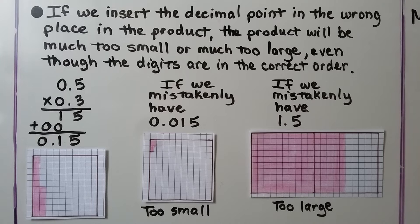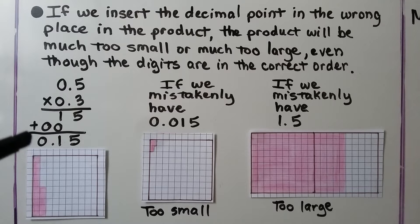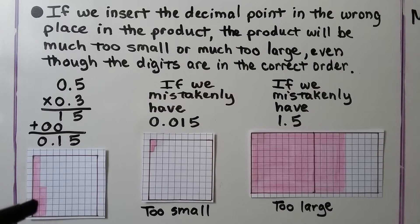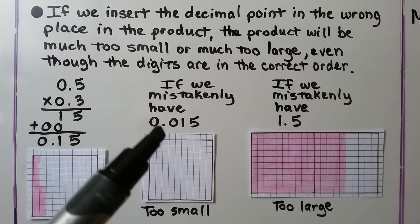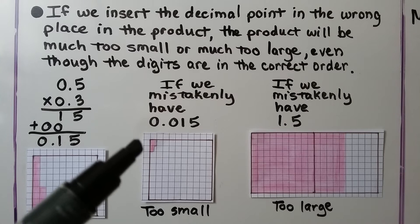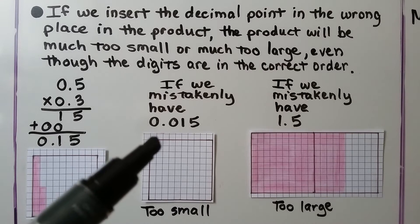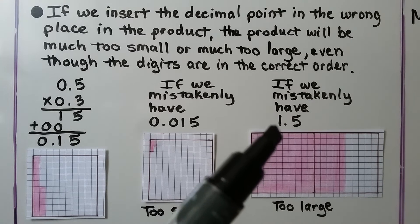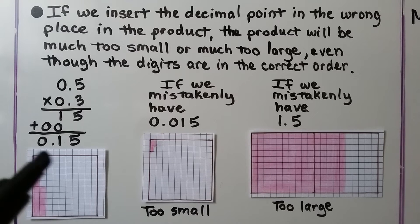If we insert the decimal point in the wrong place in the product, the product will be much too small or much too large, even though the digits are in the correct order. We have five-tenths times three-tenths, equal to fifteen-hundredths. We have a hundred squares here, and we've shaded in fifteen — fifteen of the one hundred are shaded, representing an area of fifteen-hundredths. If we mistakenly have fifteen-thousandths, it would be one and a half little squares — that's too small. And if we mistakenly put the decimal between the one and the five, we'd get one and five-tenths — that's too large.